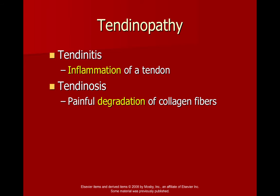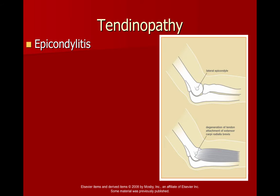Moving on to diseases of the tendons: inflammation of a tendon is very different from degradation of collagen fibers within the tendon, so make sure you do not confuse the two. In order to understand how a tendon can get inflamed, consider that there are bony structures called epicondyles that come off of major joints that tendons actually connect to. Depending on whether it's a lateral epicondyle or a medial epicondyle, you could have a different causative movement.